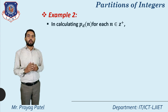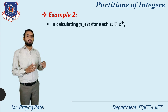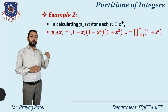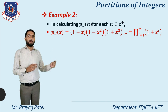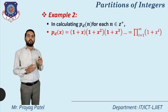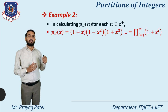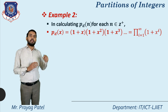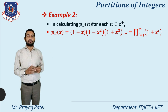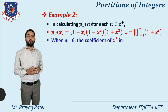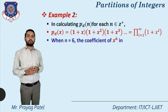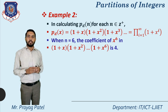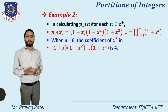For the general formula to find p_d(n), p_d(x) equals (1+x)(1+x²)(1+x³) up to infinity, which equals the product from i=1 to infinity of (1+xⁱ). For the previous example where n=6, we consider up to x⁶: (1+x)(1+x²)(1+x³)(1+x⁴)(1+x⁵)(1+x⁶), and the coefficient of x⁶ equals 4, confirming our answer.